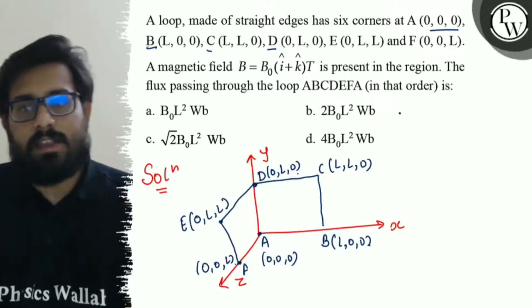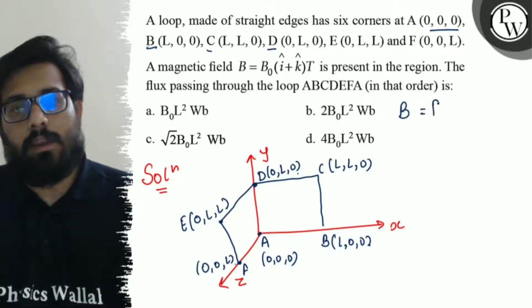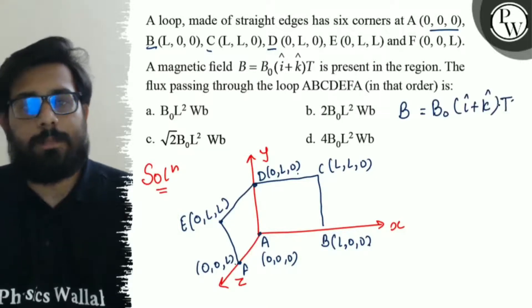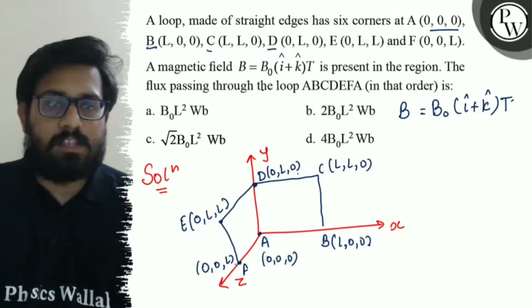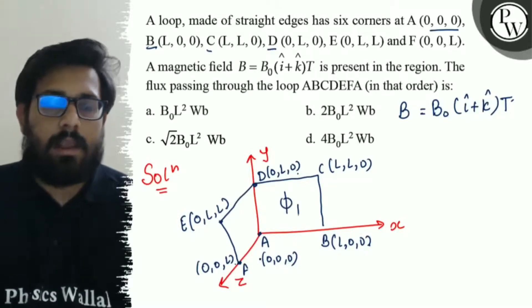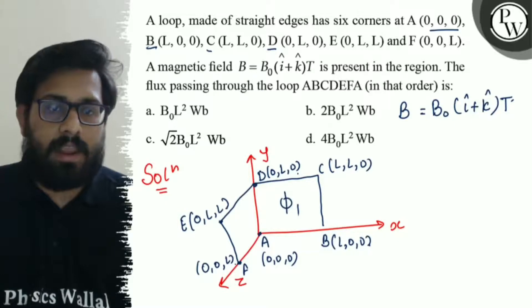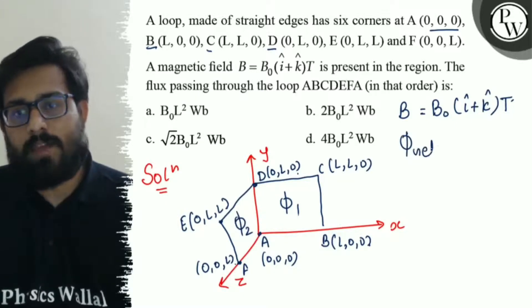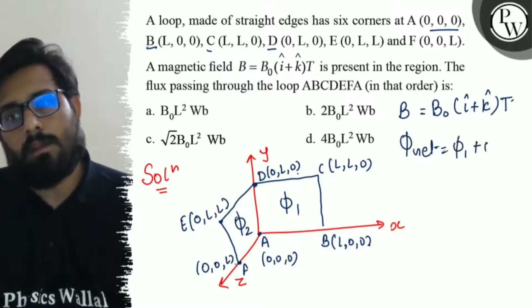Now, the field is given as B is equals to B0 I cap plus K cap Tesla. And we have to calculate the flux passing through the loop. So, let us consider the flux through the loop ABCD as phi 1. And let us consider the flux through the loop ADEF as phi 2. And the net flux can be written as phi 1 plus phi 2.